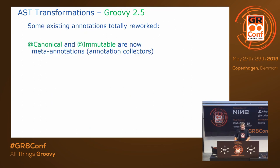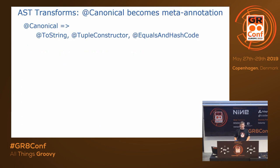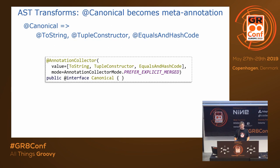Also worth understanding: @Canonical and @Immutable are now meta annotations. A meta annotation lets you declare an annotation to be a group of others. Using @AnnotationCollector on your meta annotation, you just give it a list of all the constituent annotations it represents. During compilation, whenever the compiler sees @Canonical it pulls that out and replaces it with the three constituent annotations. You can also have parameters passed down to the constituent transforms.